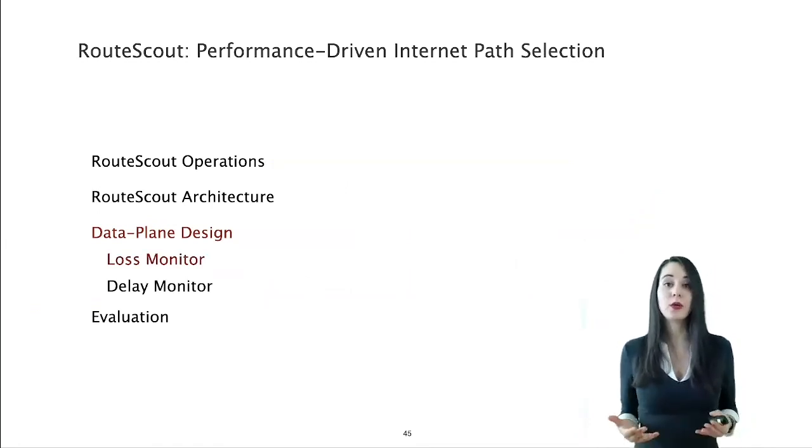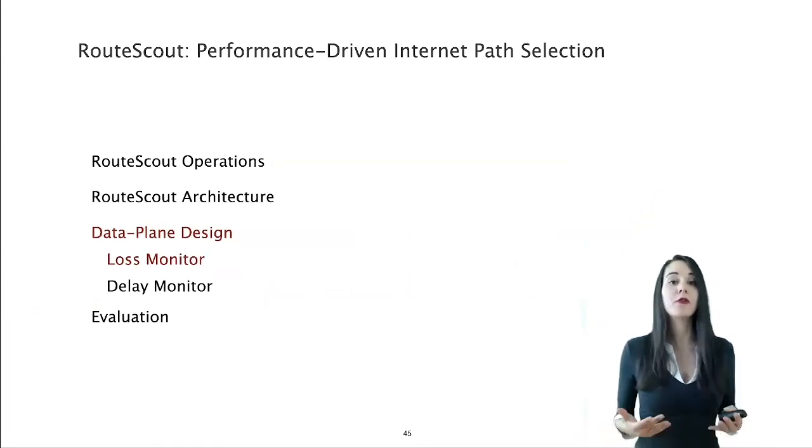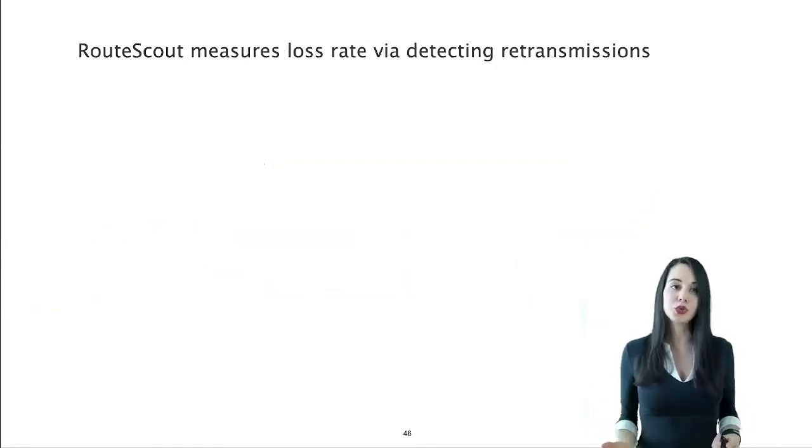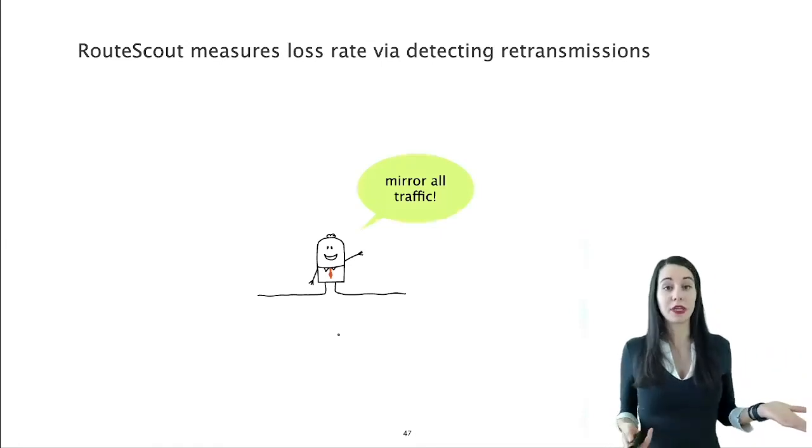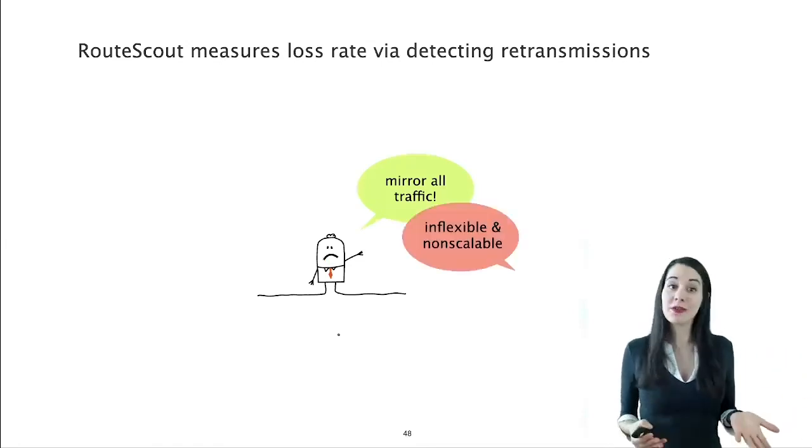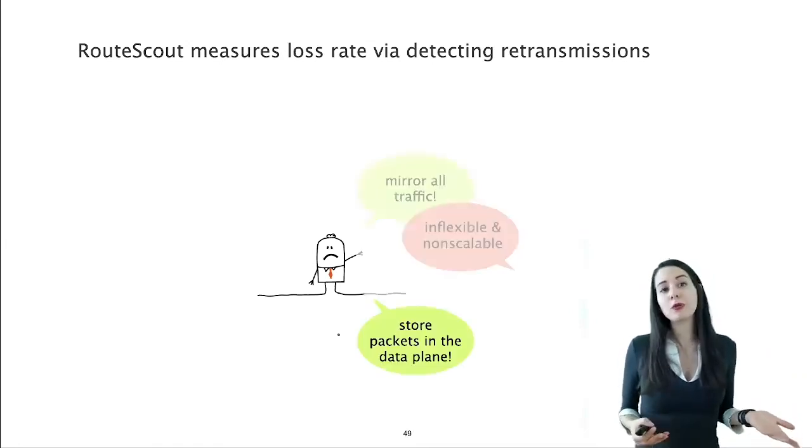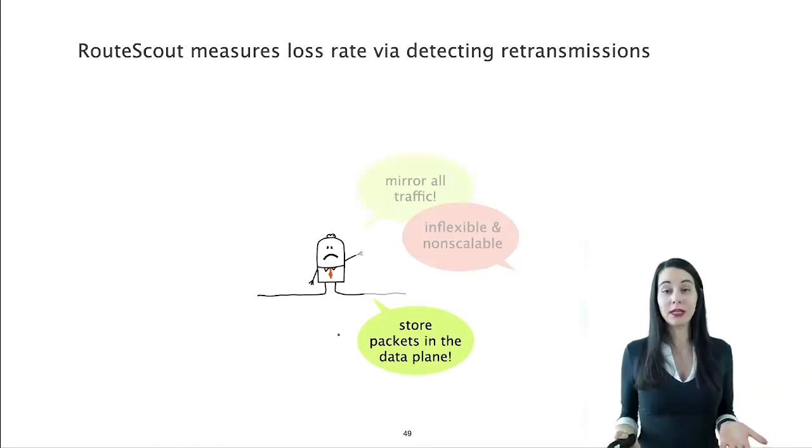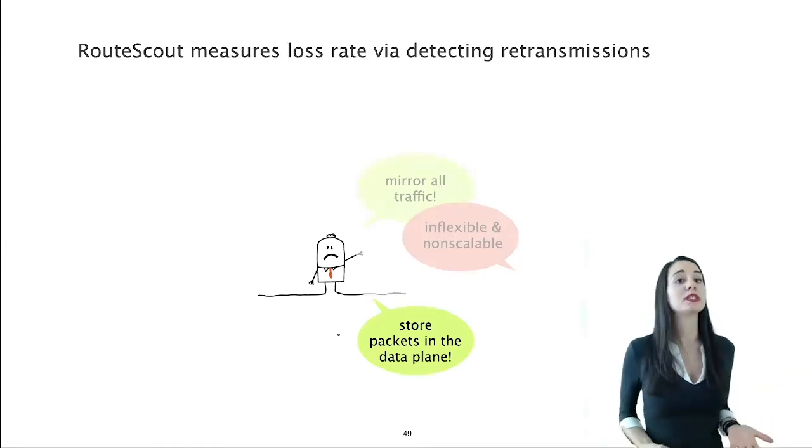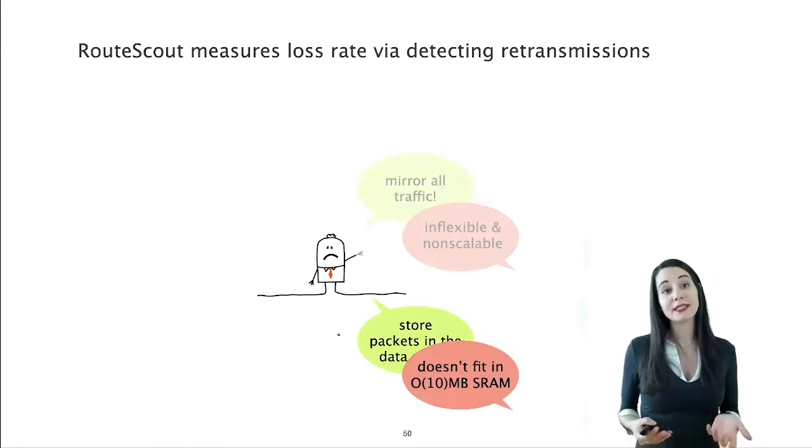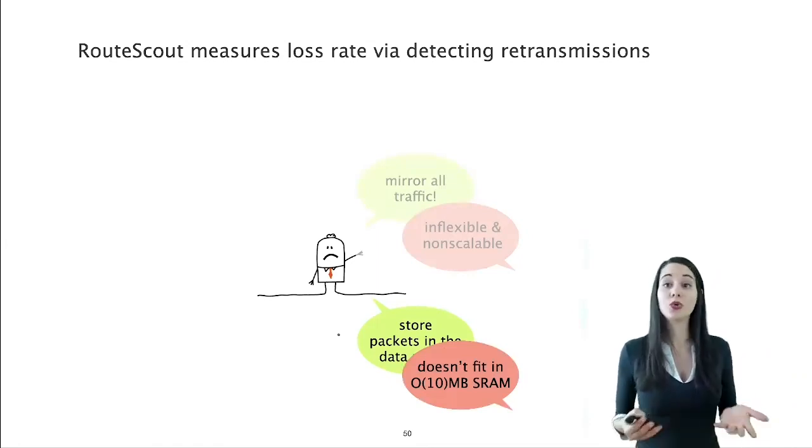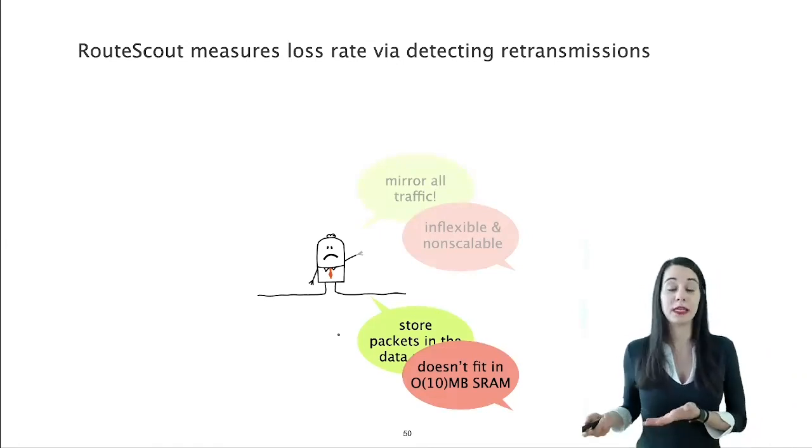The first data plane component that I will describe is the loss monitor, whose goal is to calculate the loss rate per pair of prefix and next hop. To do so, RouteScout detects and measures retransmissions. But why is this even hard? One could just mirror traffic, right? Wrong. Because mirroring does not scale, and it's also inflexible. But one could still store all received packets in the data plane, and then upon arrival of a new packet, they would just check if the packet is already stored, and if so, that would be a retransmission. But this scales with the number of packets, and thus could not fit in the tens of megabytes of SRAM in today's switches.